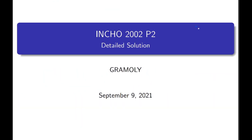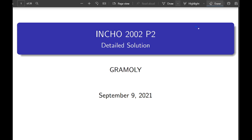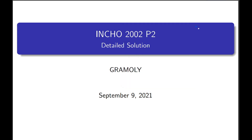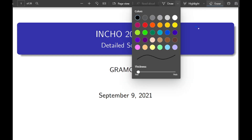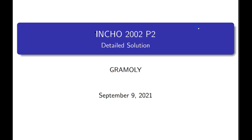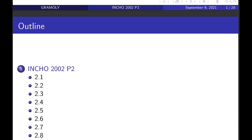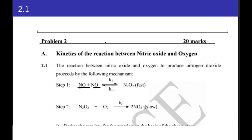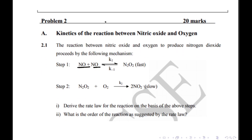Hey guys, today we are going to start INCHO 2002 problem number 2 solutions. In this series we will be tackling all the detailed solutions of the Indian National Chemistry Olympiad, and all the solutions aren't available on any other site. This particular problem is from physical chemistry, from the chapter on chemical kinetics. It was problem number 2 from the paper and comprised 20 marks.